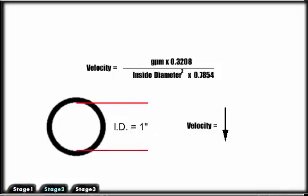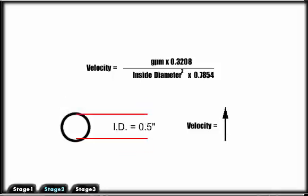If the diameter of a conductor is increased, the velocity of the fluid will decrease. Conversely, if the diameter of the conductor is decreased, the fluid's velocity will increase.